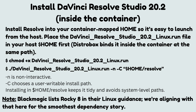Install DaVinci Resolve 20.2 inside the container. Install Resolve into your container-mapped home so it is easy to launch from the host. Place the DaVinciResolve.run file in your host home — DistroBox maps it inside the container at the same path. Make the file executable using chmod +x, then run the file with parameters -n and -C. -n is non-interactive; -C chooses a user-writable install path. Installing in ~/resolve keeps it tidy and avoids system-level paths. Blackmagic lists Rocky 8 in their Linux guidance, so we are aligning with that for the smoothest dependency story.